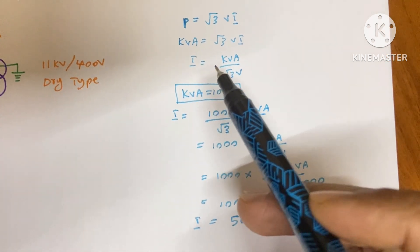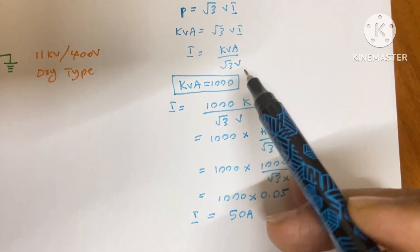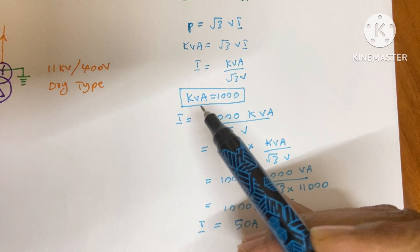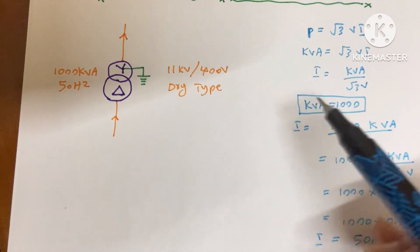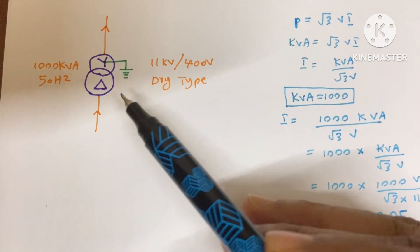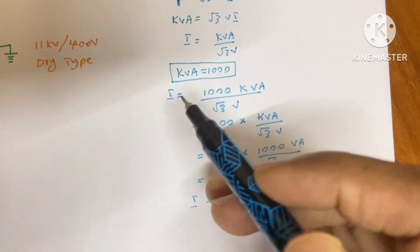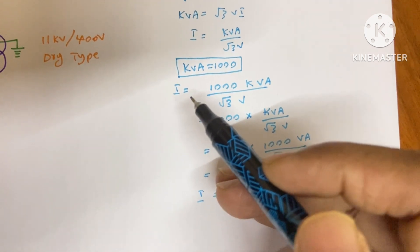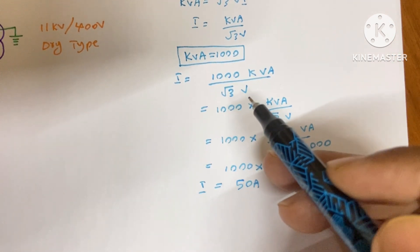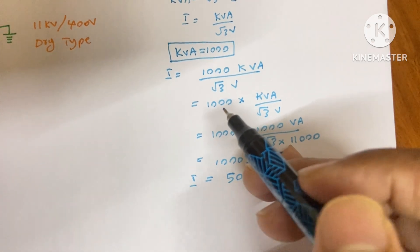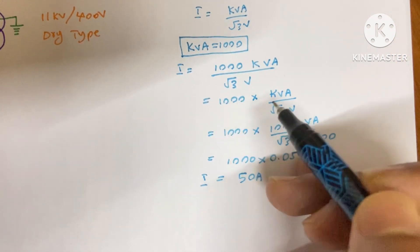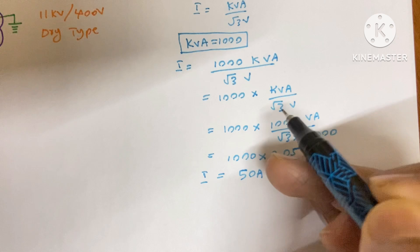Now I is equal to kVA by root 3 into V, and our kVA is 1000 kVA transformer. The current I is equal to 1000 kVA by root 3 into V, and I just wrote the equation like this: 1000 over here and these things over here.